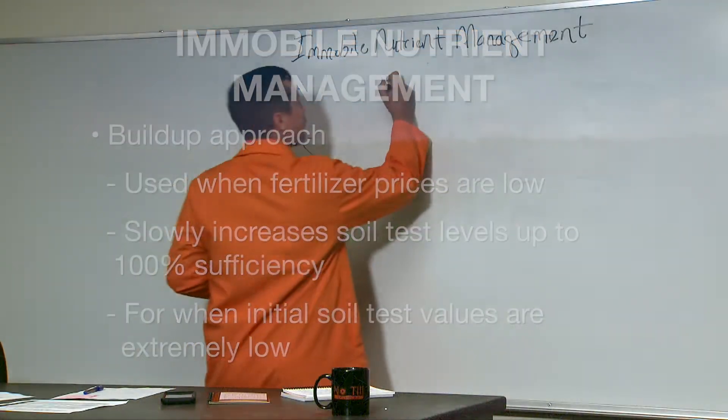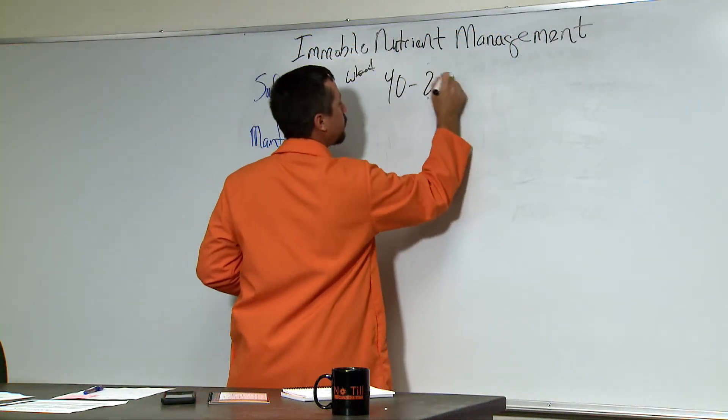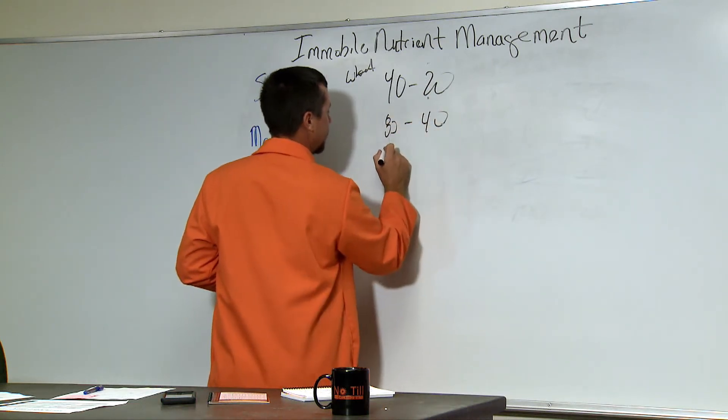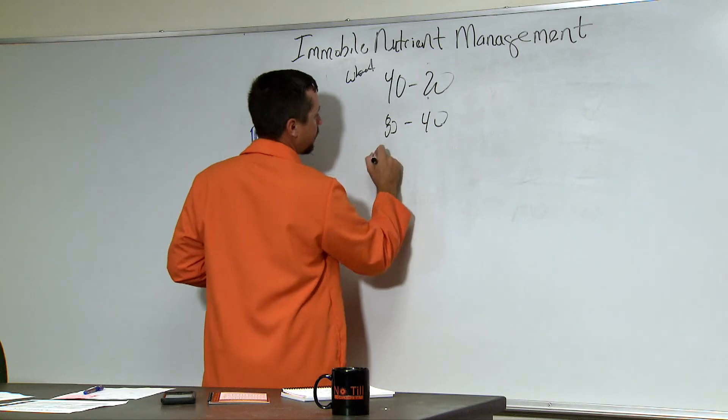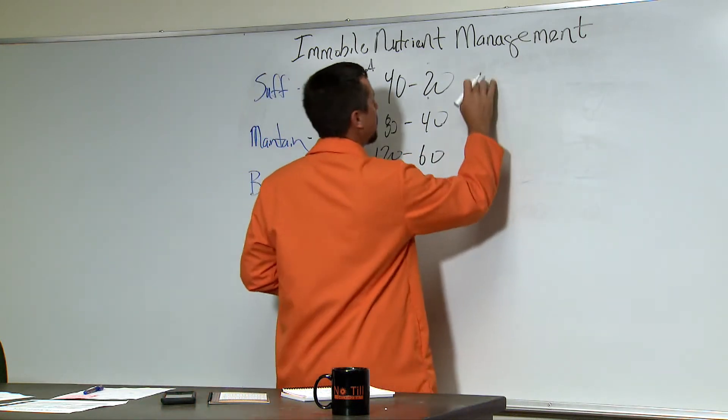Maintenance, however, just for example, if we're looking at wheat, a 40 bushel wheat crop removes 20 pounds. An 80 bushel wheat crop is going to remove 40 pounds of phosphorus and 120 for the high yielded irrigated locations, you're removing 60.